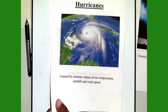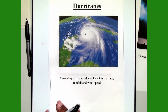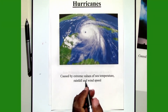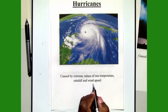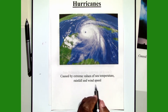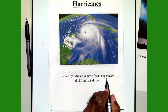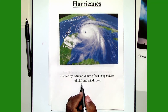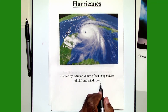The third example is hurricanes. Hurricanes are caused by extreme values of sea temperature, rainfall, and wind speed. So you are interested in extremes of three variables: extremes of sea temperature, extremes of rainfall, and extremes of wind speed.